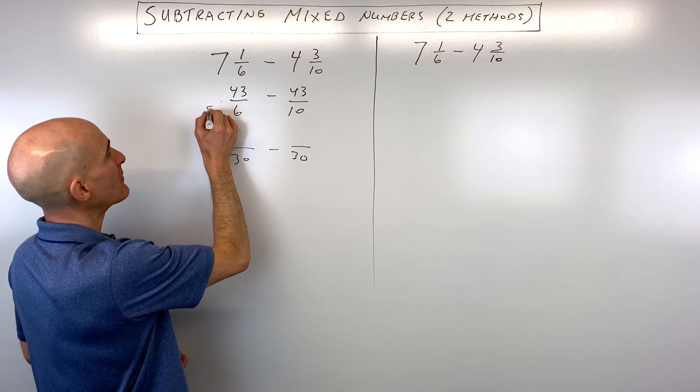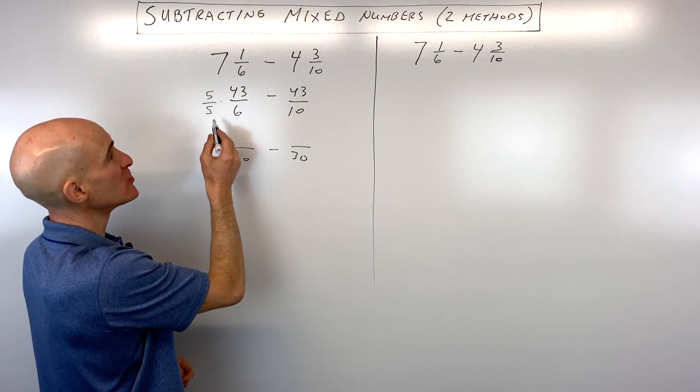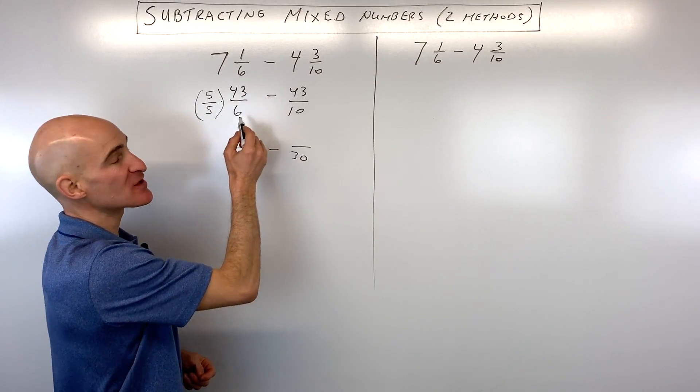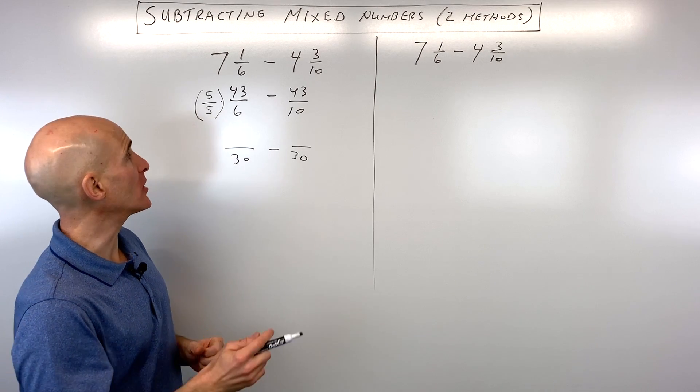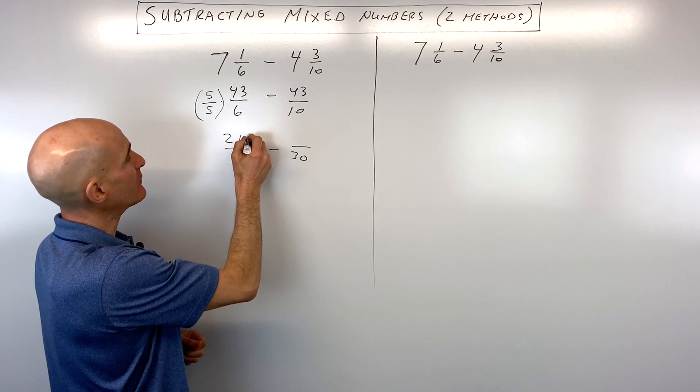To make this denominator 30, I'm going to have to multiply the bottom by 5. And then whatever you do to the denominator, you want to do to the numerator, because 5 divided by 5 is really like 1. So 1 times this fraction is not going to change its value. It's just going to change the way that it looks. 5 times 43 is actually 215.